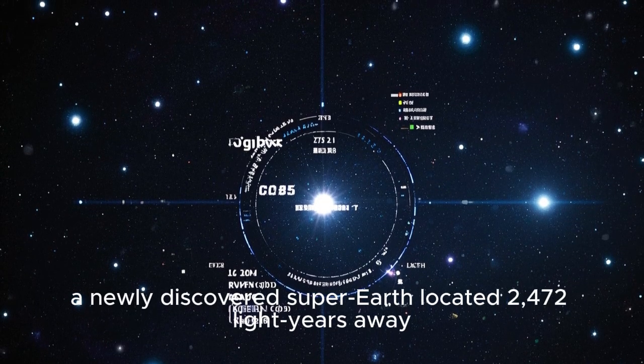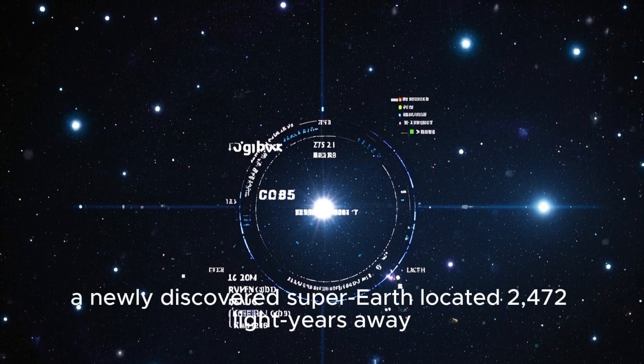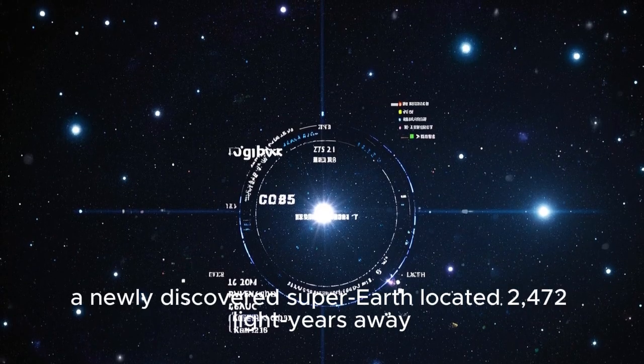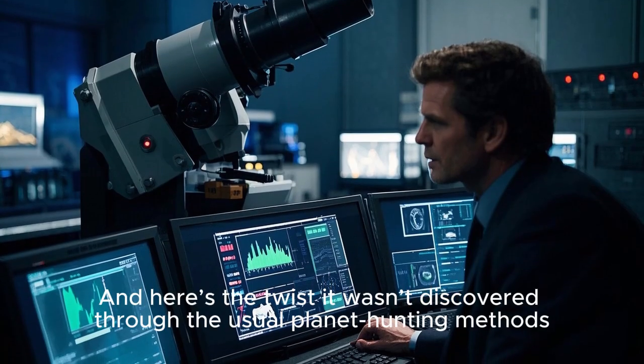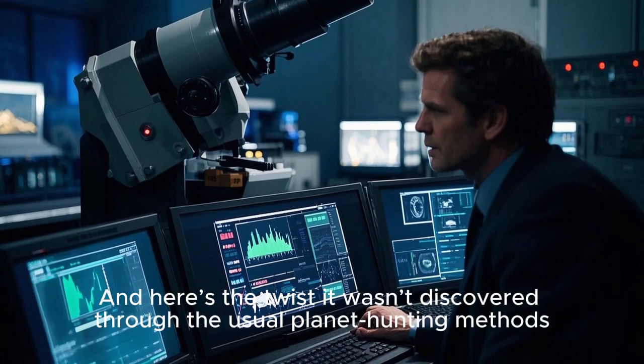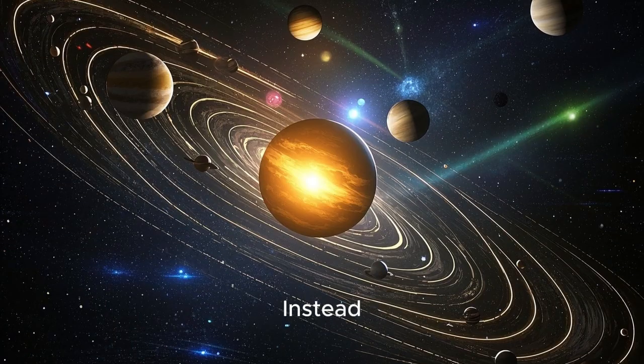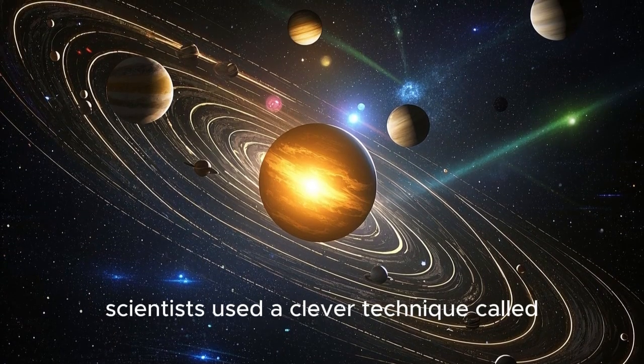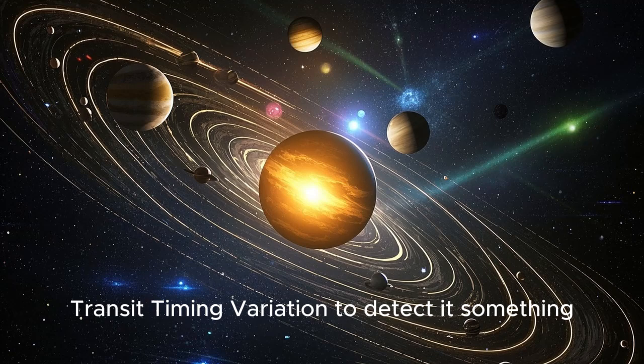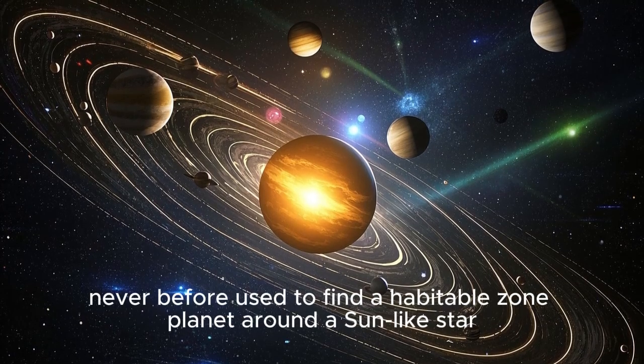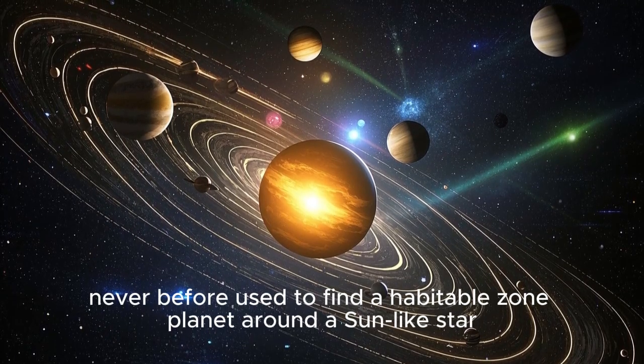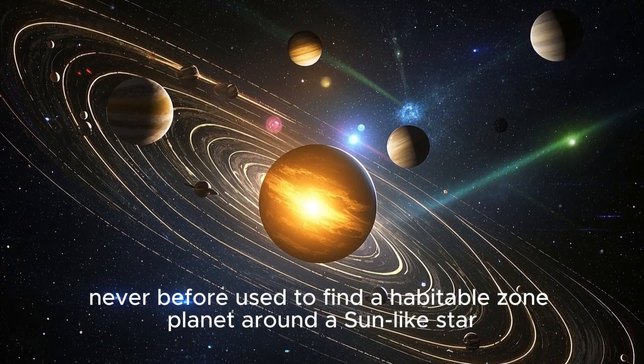A newly discovered super-Earth located 2,472 light-years away. And here's the twist: it wasn't discovered through the usual planet-hunting methods. Instead, scientists used a clever technique called transit-timing variation to detect it, something never before used to find a habitable zone planet around a sun-like star.